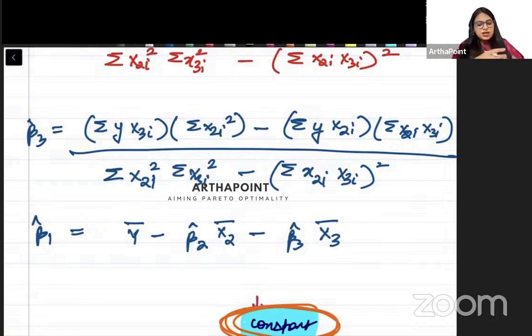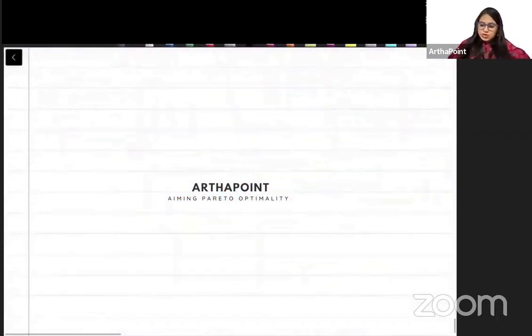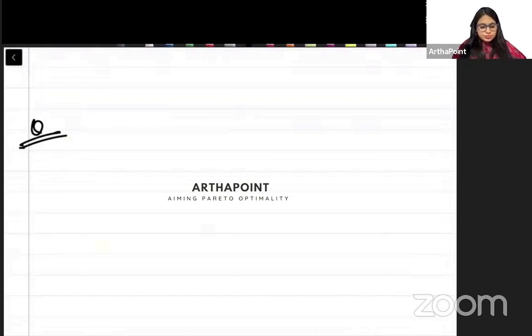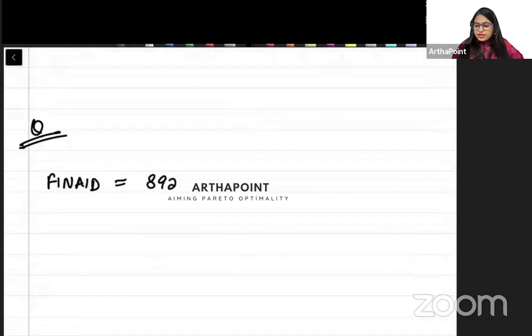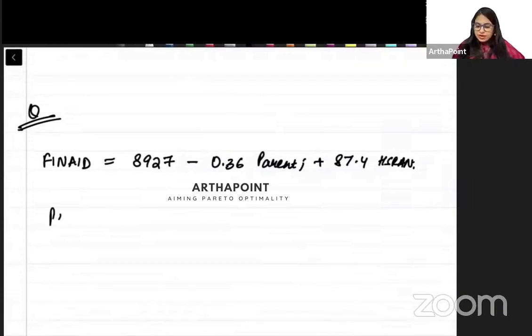Now, let me just take one numerical example for a multi-variable regression model also and let us try to do that. So the question is: suppose I am giving you this question. Financial aid equals 8927 minus 0.36 times parent plus 87.4 times HS rank.